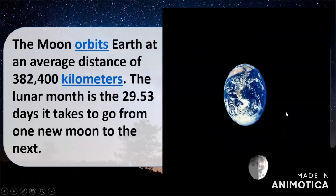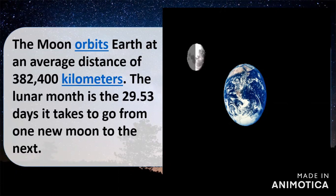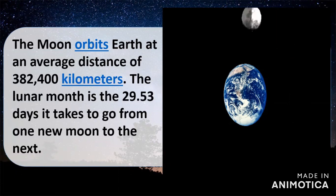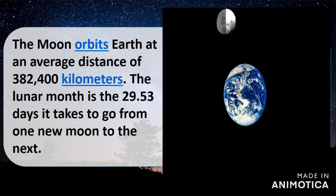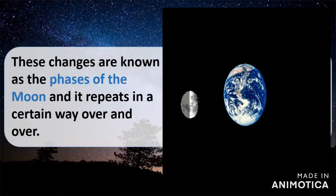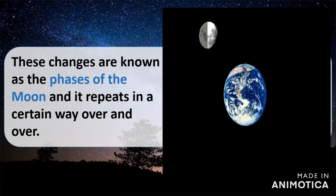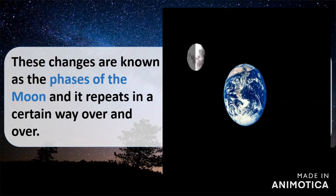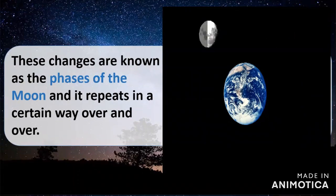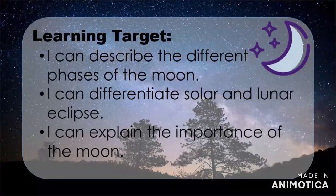The moon orbits the earth at an average distance of 382,400 kilometers. The lunar month is 29.53 days — the time it takes to go from new moon to the next. As the moon circles the earth, the portion of the moon we see changes, and these changes are known as the phases of the moon, repeating in a certain pattern over and over.